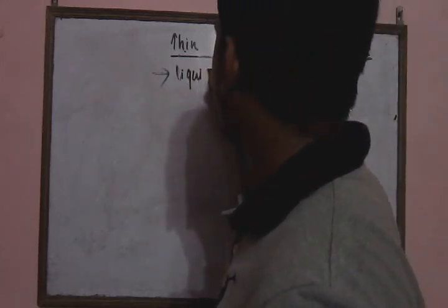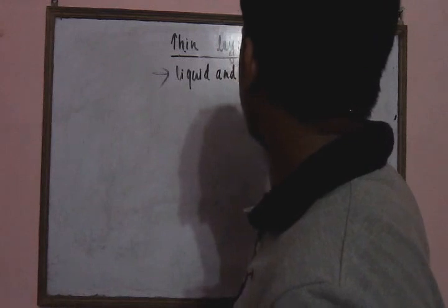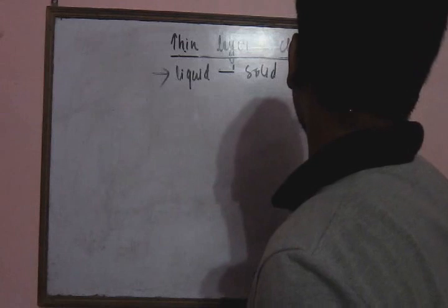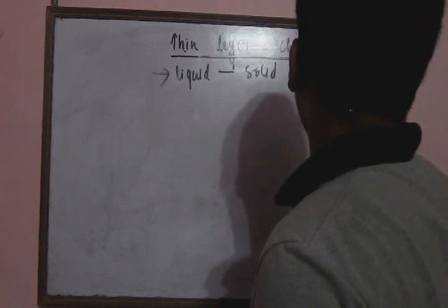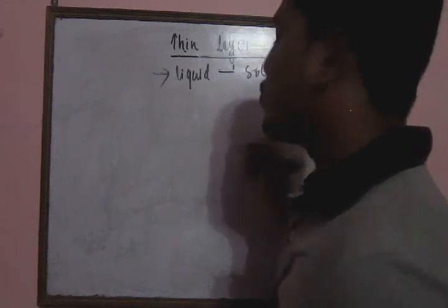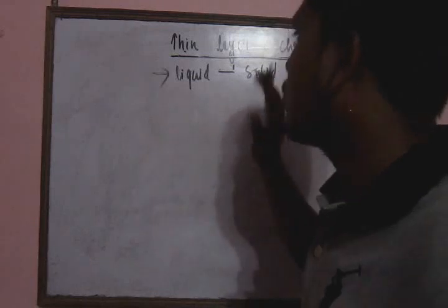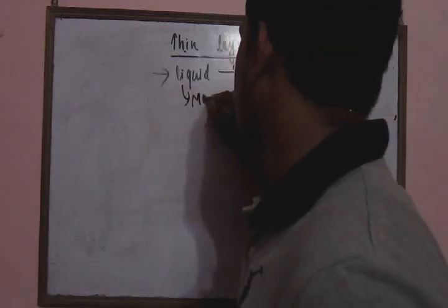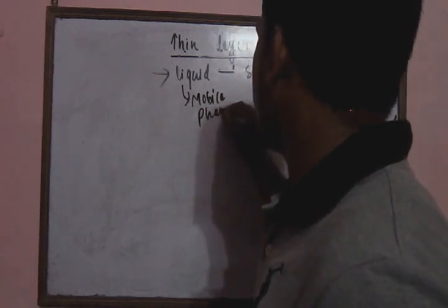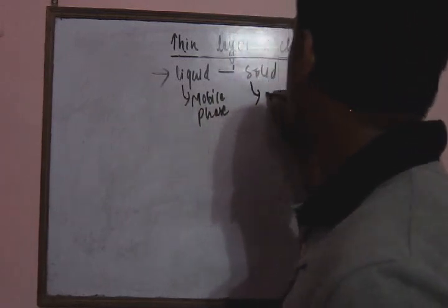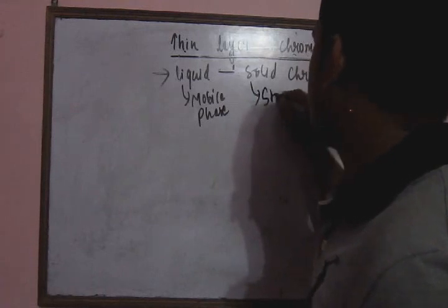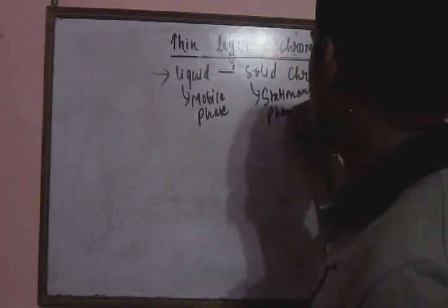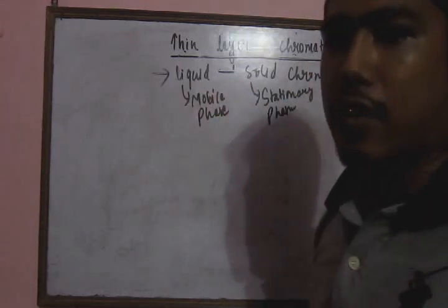Thin layer chromatography is also called liquid-solid chromatography. It is called the liquid-solid chromatography because the liquid is the mobile phase, whereas the stationary phase is the solid.